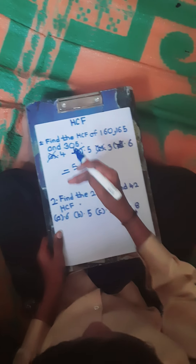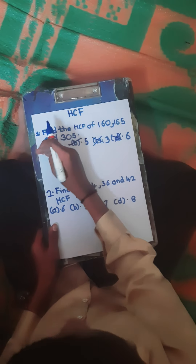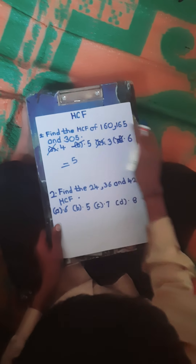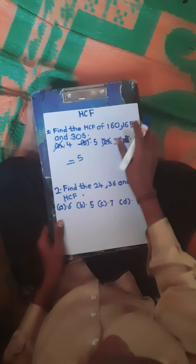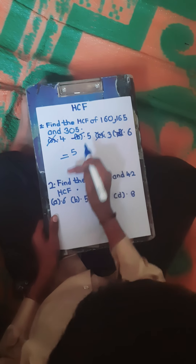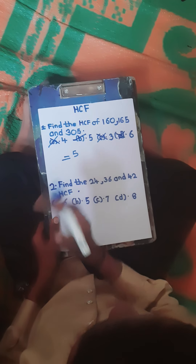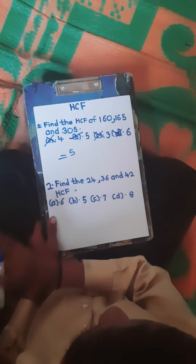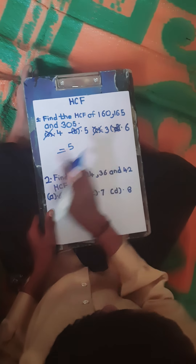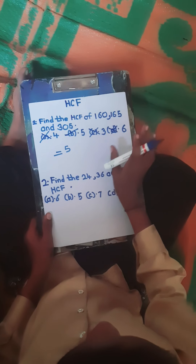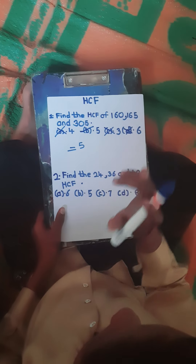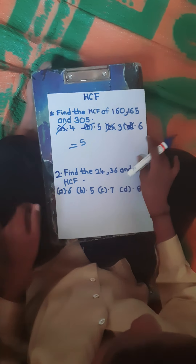This is the short trick: whichever number from the given options is divisible by all the numbers in the question is the HCF. Don't do lengthy addition or multiplication — directly give the answer. The number which divides all of the given numbers is the HCF.